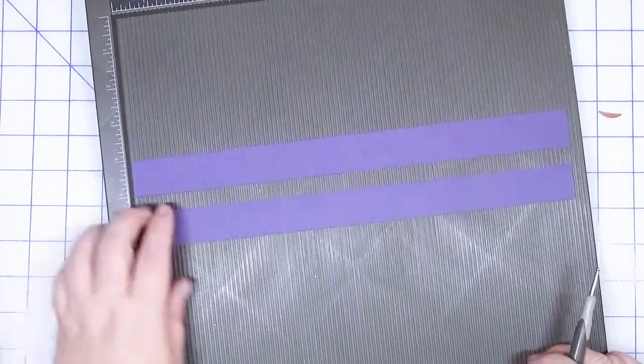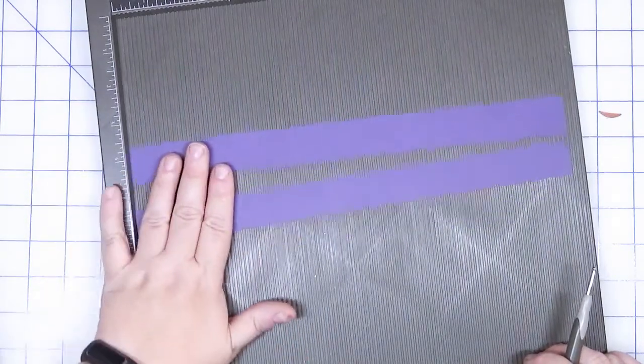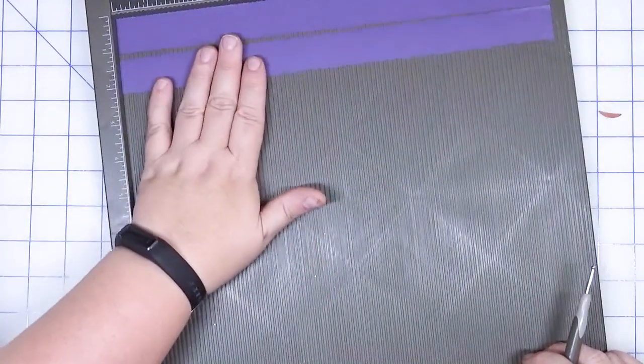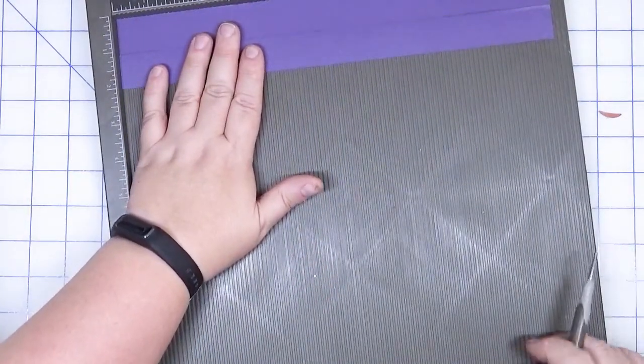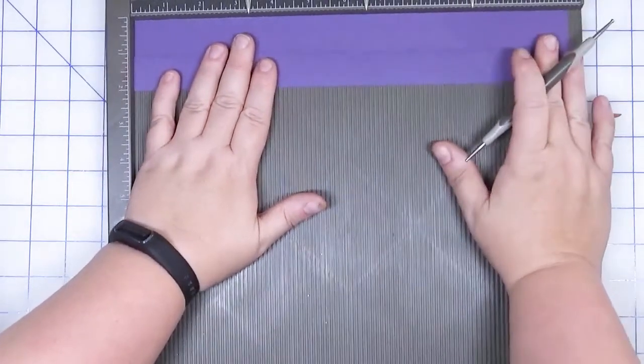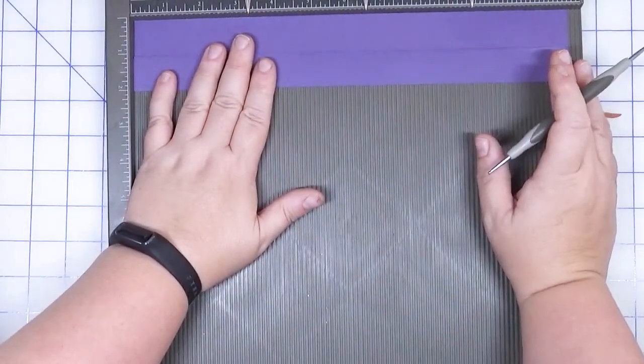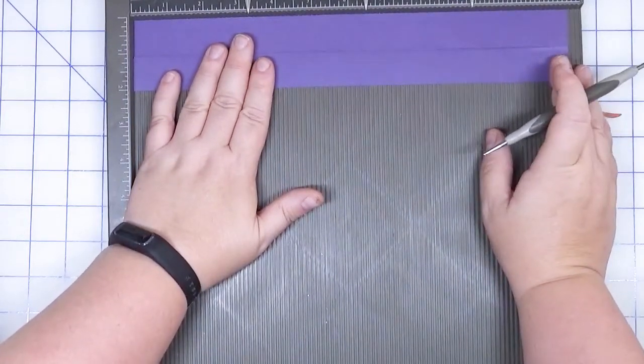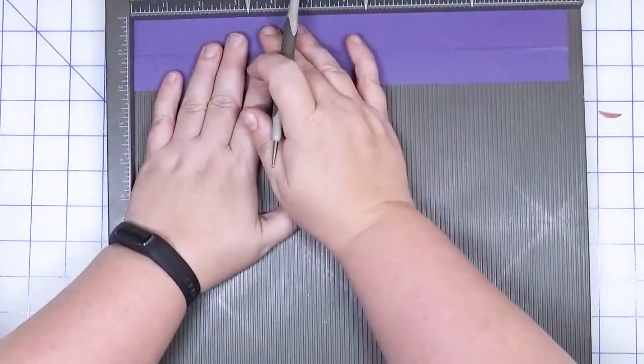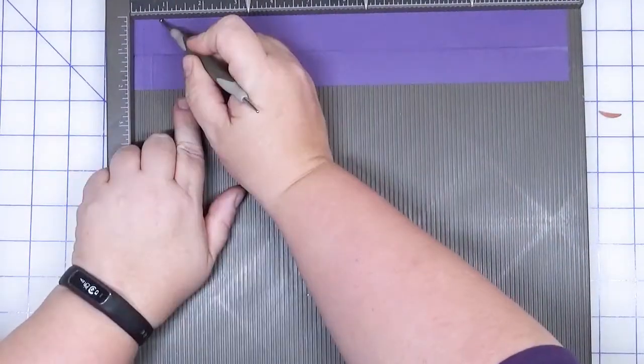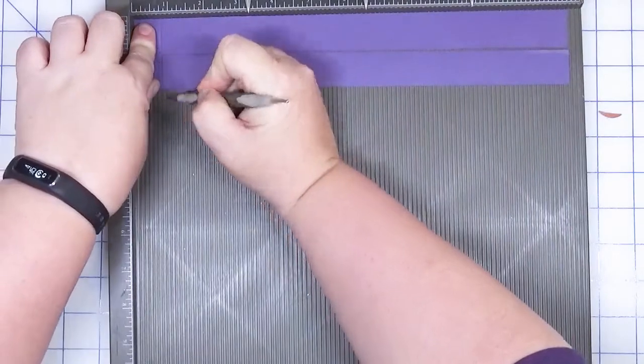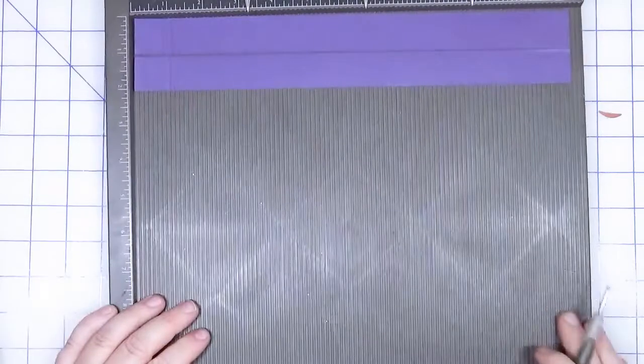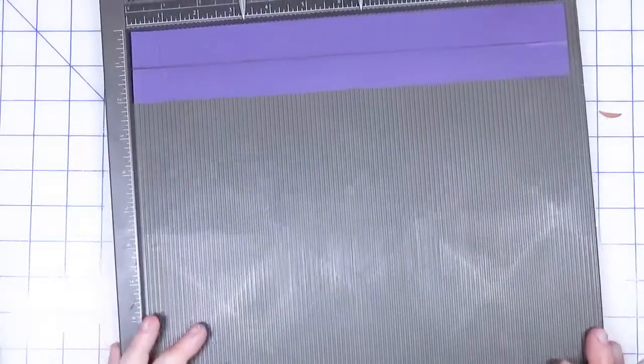For the next embellishment, we want to take the two one inch by twelve inch strips of purple and we are going to score these on the quarter inch all the way across. Now I had you cut this in half, it probably would have been easier to not cut it in half and to do this all in one shot, but sometimes you just don't think of these things until it's too late. I'm going to score these on the quarter inch all the way down.